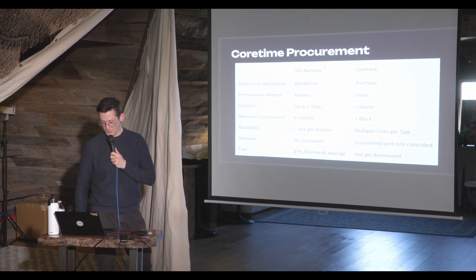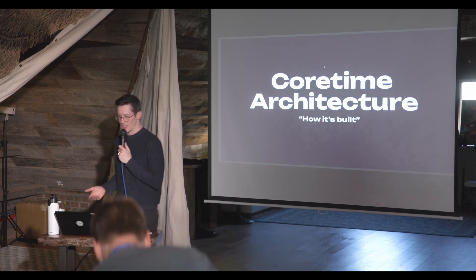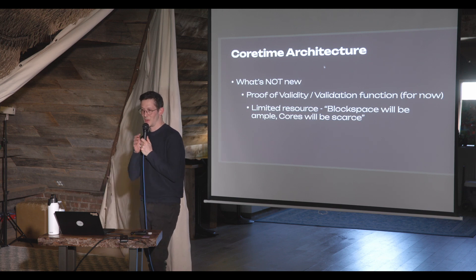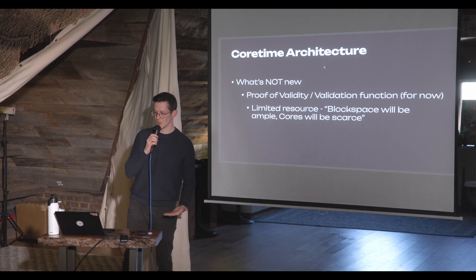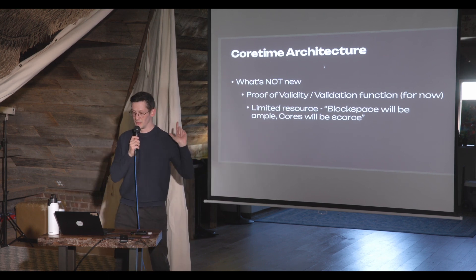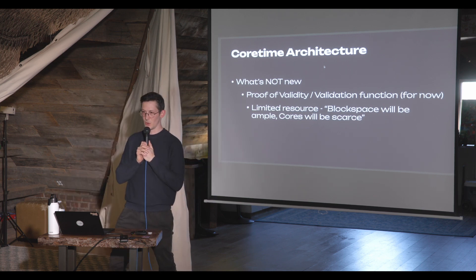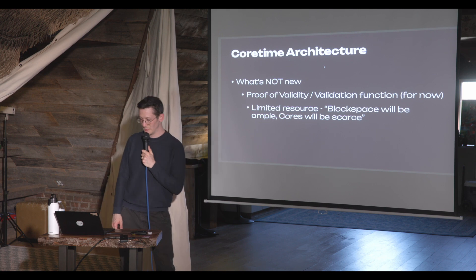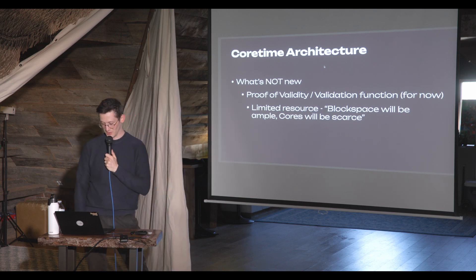What we've done to calculate the cost is look at what validators are doing to validate parachains and try to price it competitively to equivalent AWS instances. What's not new with core time is the proof of validity or validation function for now. The block space Polkadot provides is ample, but cores will still be relatively scarce — 200 is a good amount of execution power, but in the grand scheme of things it's not a huge supply.